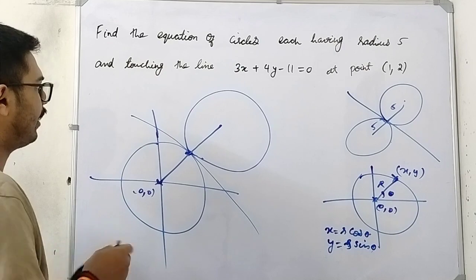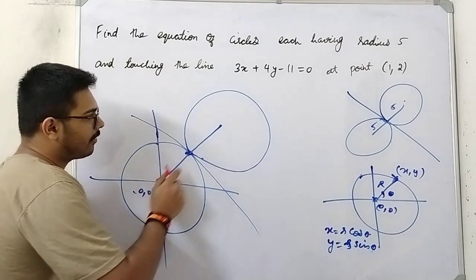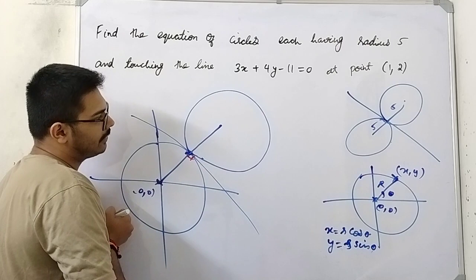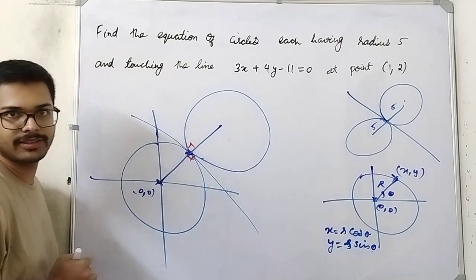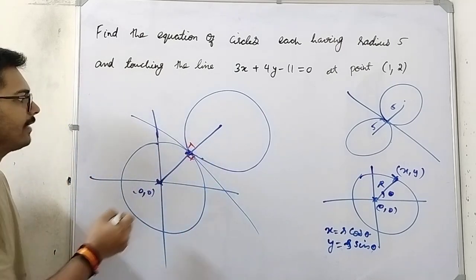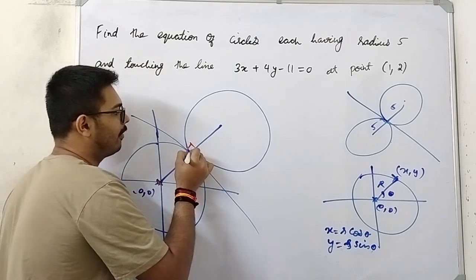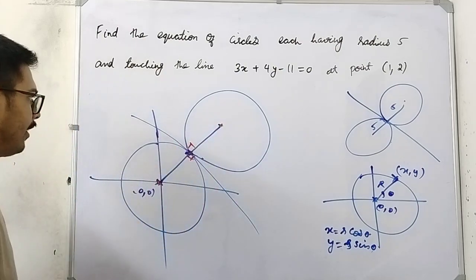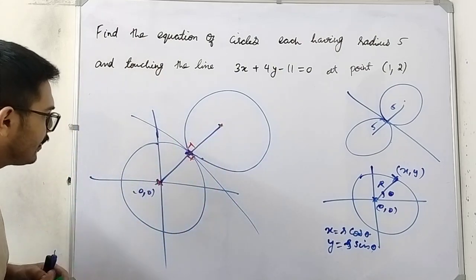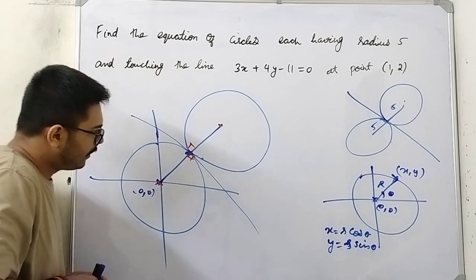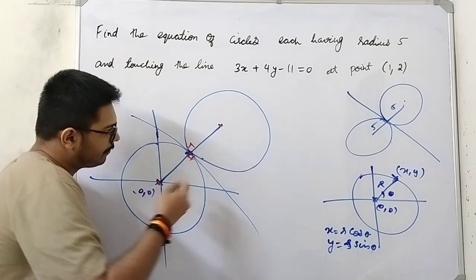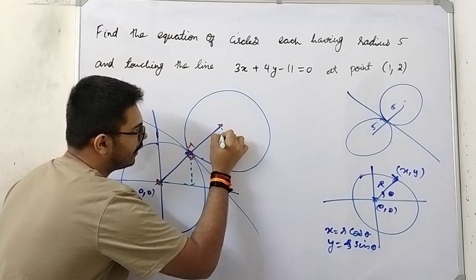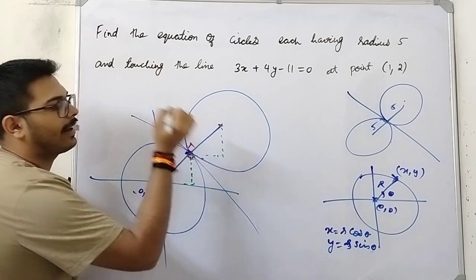Now, how will you conclude these points are collinear? The radius is perpendicular to the tangent. In that sense, these three points will lie on the same line — they are collinear. If I complete this to form two triangles, I am making this as two triangles.